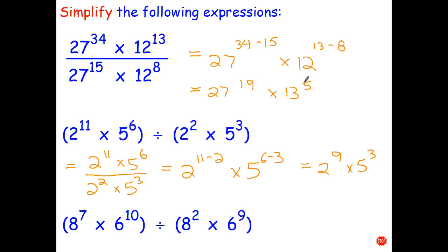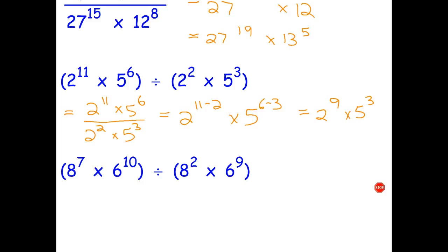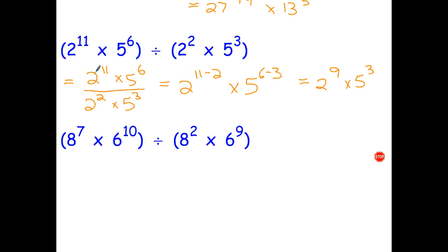Okay, with the last question, let's do this one without writing it as a fraction just to save time. Because basically what we can see here at this question: two to the eleventh divided by two squared is two to the ninth. Five to the sixth divided by five cubed is five to the power of three. And that works as long as we're multiplying because then we're just canceling out common factors. So in this case this is going to become eight to the seven subtract two, times six to the ten subtract nine.